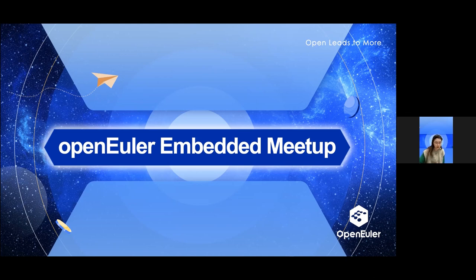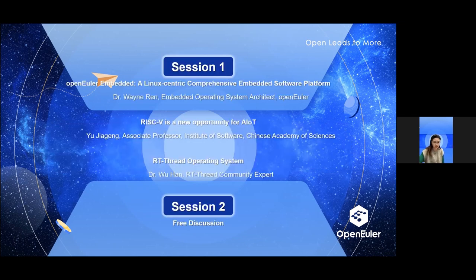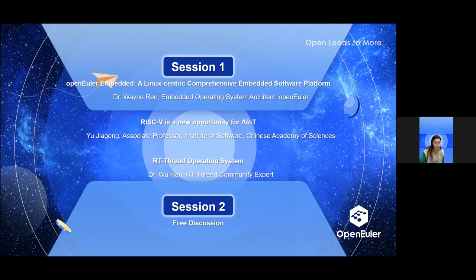First up is Dr. Wen Ren, an OpenEuler Embedded Operating System Architect. He will be giving his topic on OpenEuler Embedded, a Linux-centric, comprehensive, embedded software platform. Second, we have Jia Gong, an associate professor at the Chinese Academy of Sciences Institute of Software. Today, he will discuss how RISC-V provides a new possibility for AIoT. And finally, we have Han, who is a PhD student at the University of Exeter. His research focuses on embedded deep learning security. He worked as an embedded system software engineer at RT-Thread before enrolling at the University of Exeter. He will present his topic on RT-Thread operating system later.